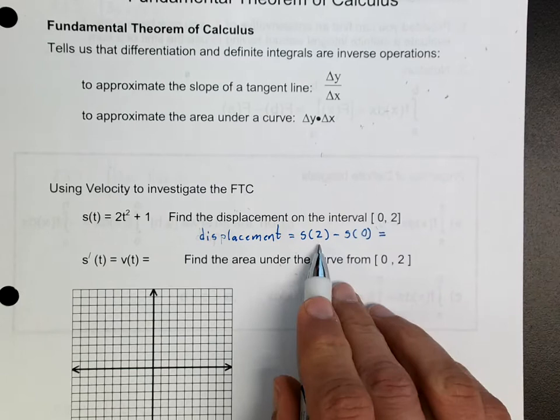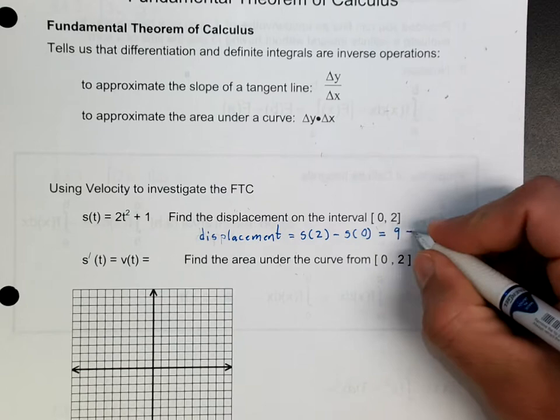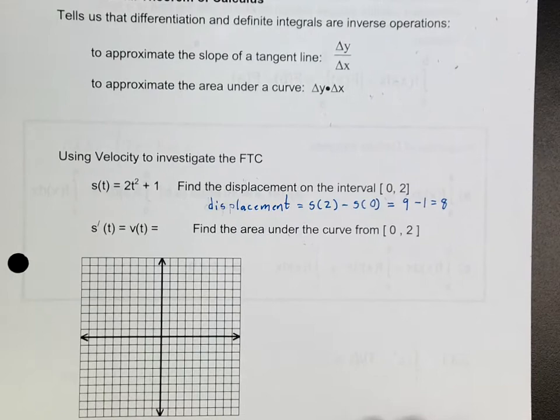And that is going to be: if you plug in 2 here, that's going to give you 4 times 2 plus 1, that's going to be 9. And if you plug in 0, well that's going to give you 1. So 9 minus 1, and that is 8.